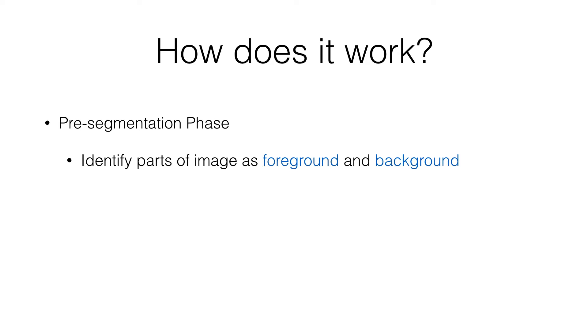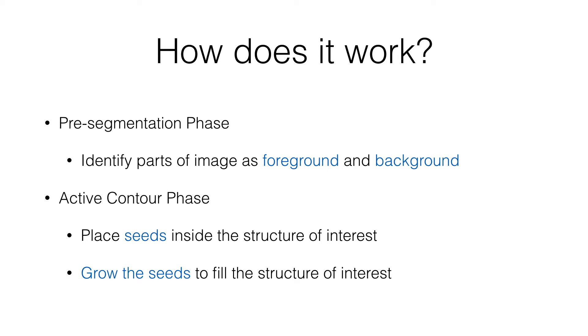How does the semi-automated segmentation work? The pre-segmentation phase always comes first. The user identifies parts of the image simply as foreground and background — it's a binary thing, and there are a couple of ways to do that which we'll go through. Then the active contour phase is what the algorithm does, again under your supervision — you can watch the segmentation evolve and stop it.